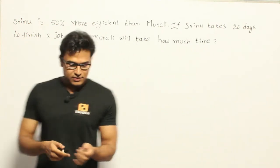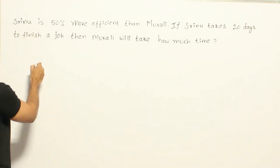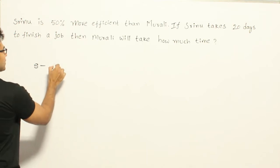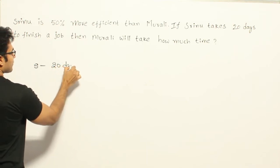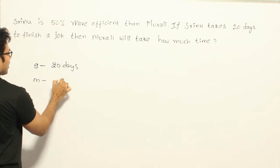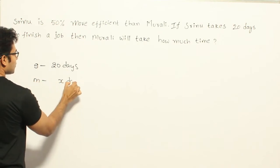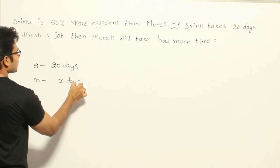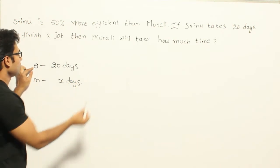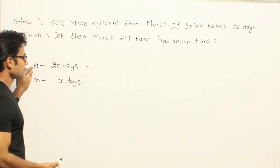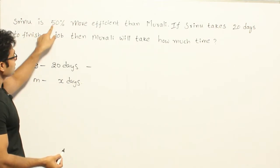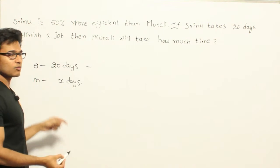So they are saying that Sreedoo is going to finish some job in 20 days. And Murali, we have to find out the number of days. Since we don't know the number of days, we are taking X days. But then they are saying that Sreedoo's efficiency is 50% more than Murali's efficiency.